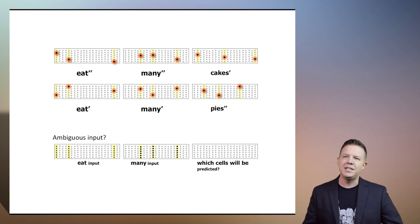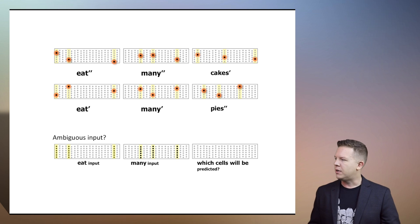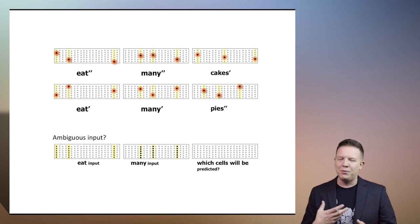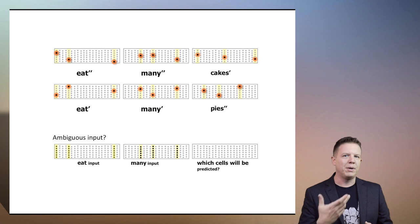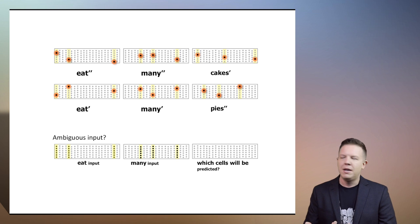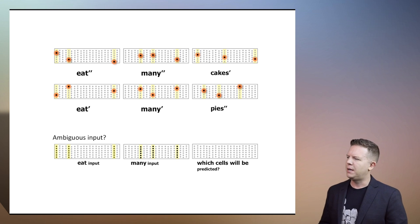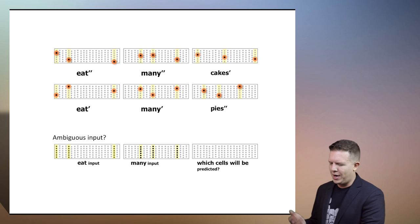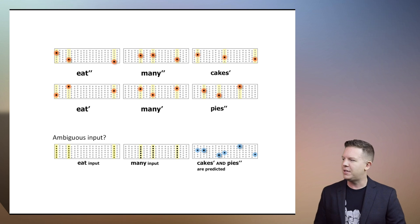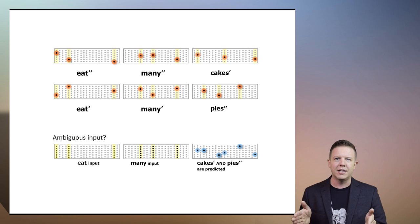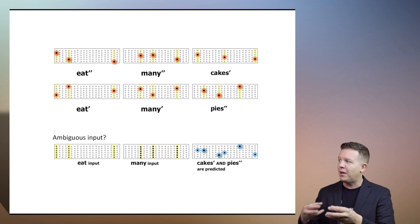We can take this even one step further if we give it two ambiguous inputs. What if we just sent the spatial pattern eat and the spatial pattern many — which cells will now be predictive? We've got all these cells for cakes and pies. And what happens here is the exact same thing. Since we don't have a context,